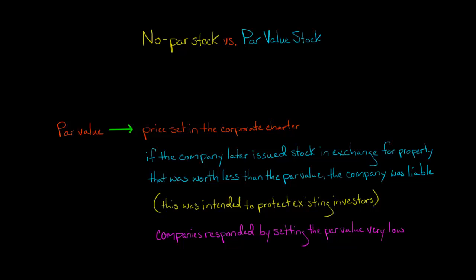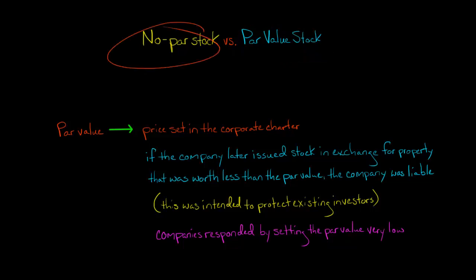One of the most confusing topics for students studying how to account for stock issuances is the concept of par value. You've got some companies that issue stock that has a par value associated with it, and then you've got some companies that issue stock that has no par value at all. So naturally, students are wondering: what is this par value? Why does it exist?